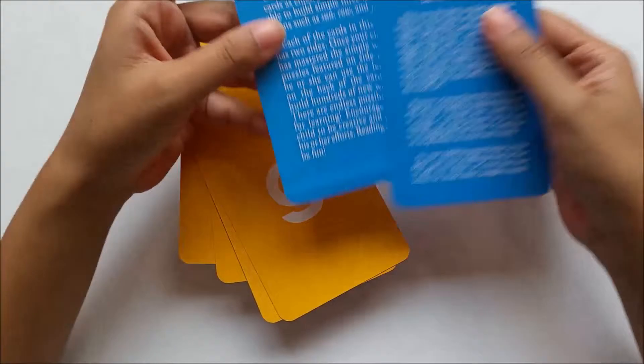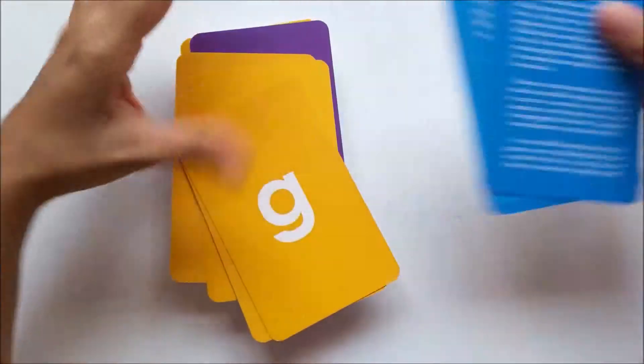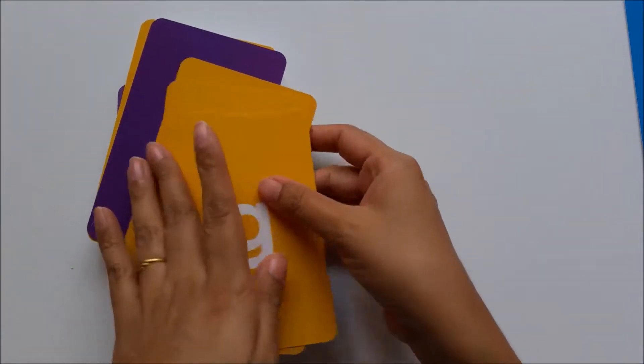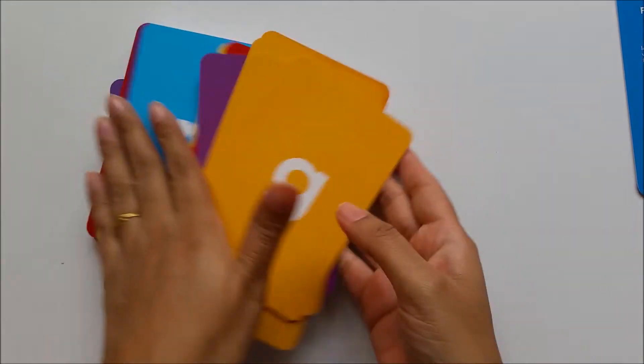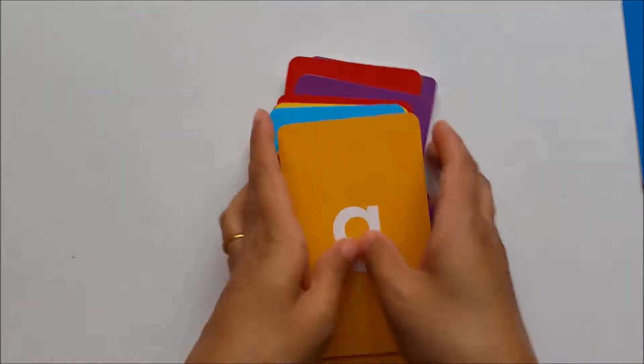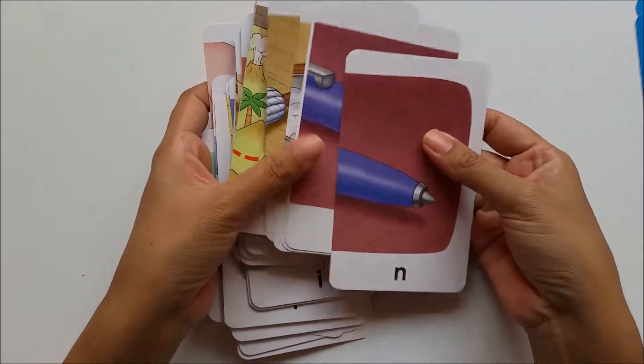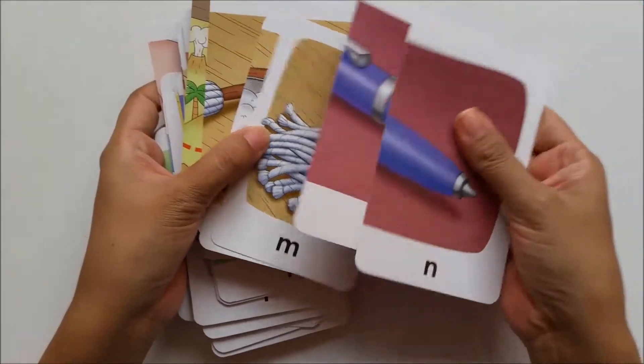So you can see these two cards for the parents for instructions, and these are the cards. As you can see, these are very beautiful, colorful cards. Check this out. Each word is made up of three cards. For example, I have here...